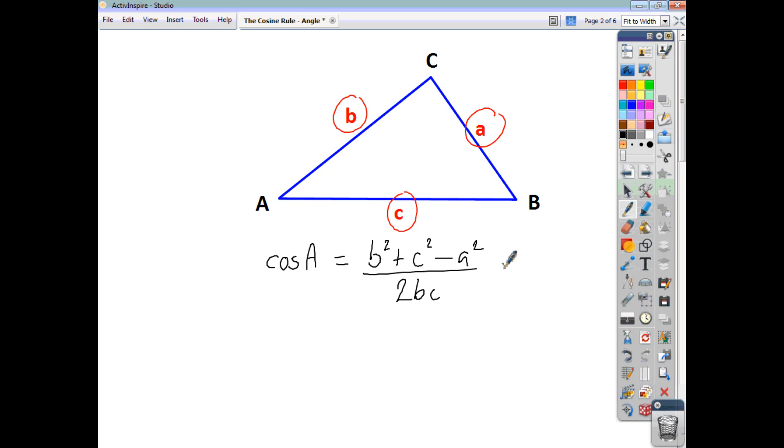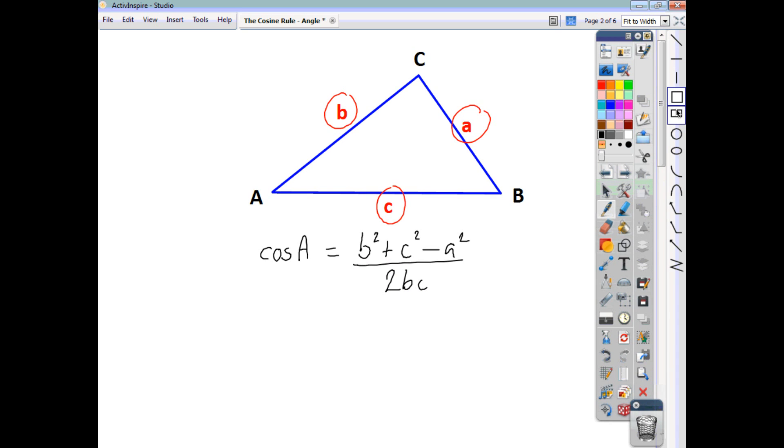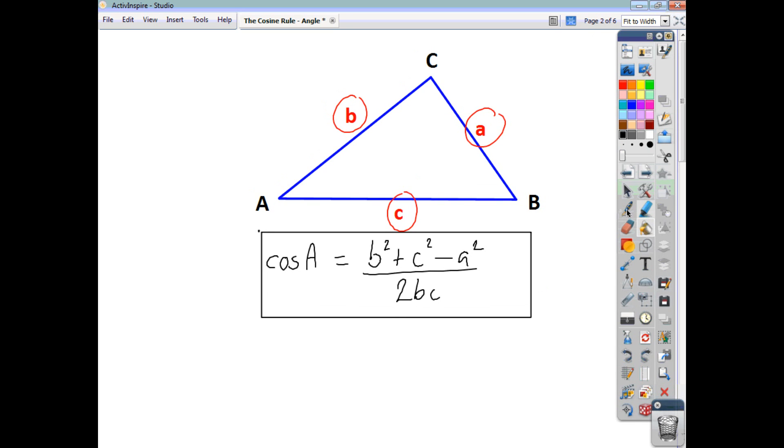That will be given to you in your formula sheet at National 5. One thing that I want to draw your attention to is make sure that it's the side opposite the angle you're looking for. If you're looking for angle A, you want to find cos A. The square of the side that you end up taking away is always the side that's opposite the angle.